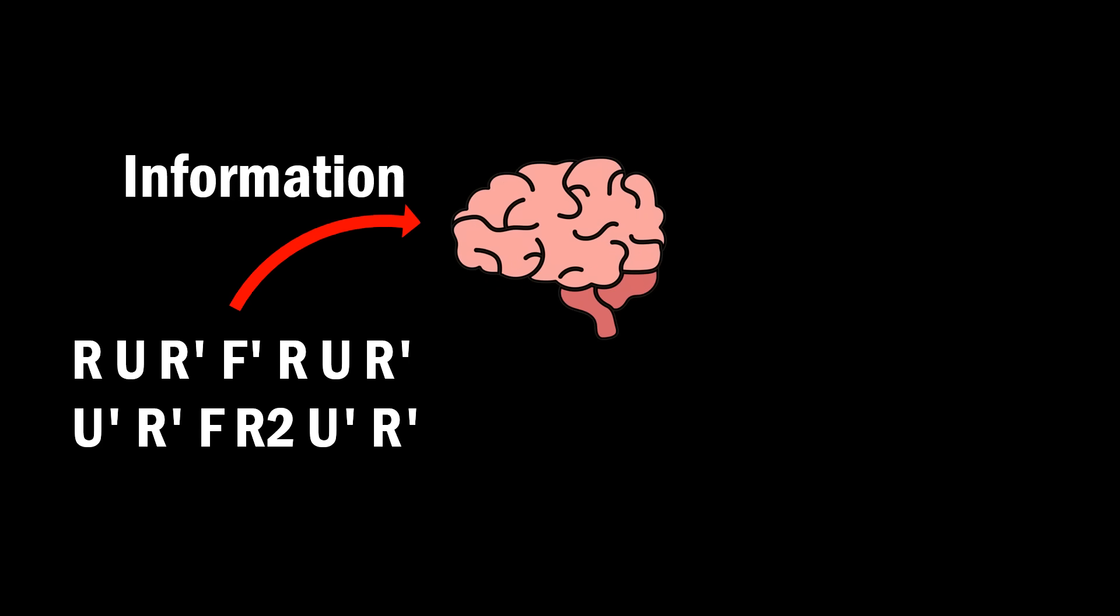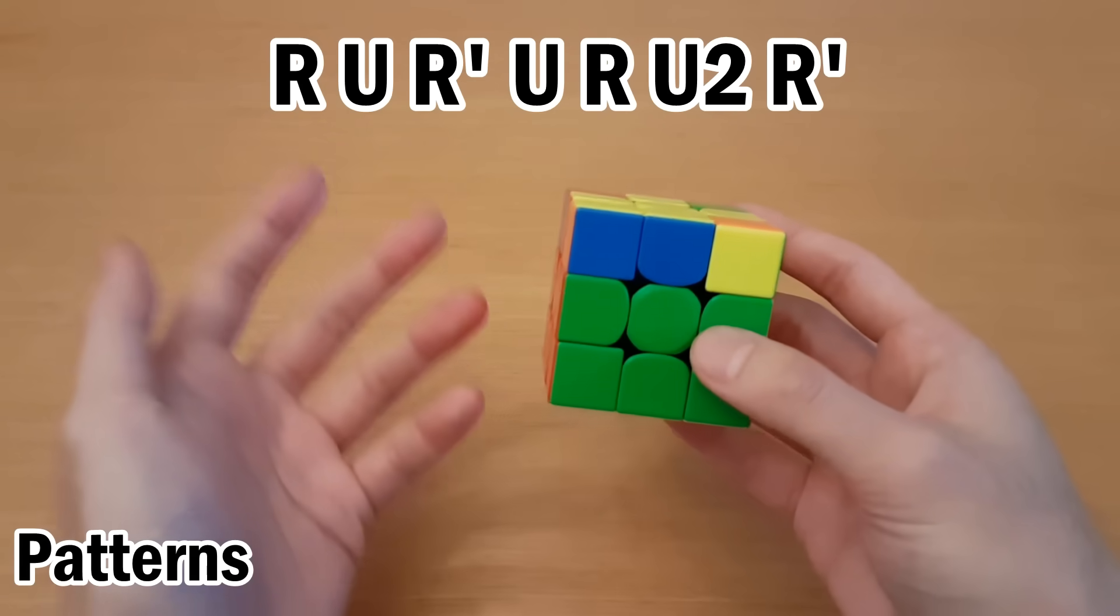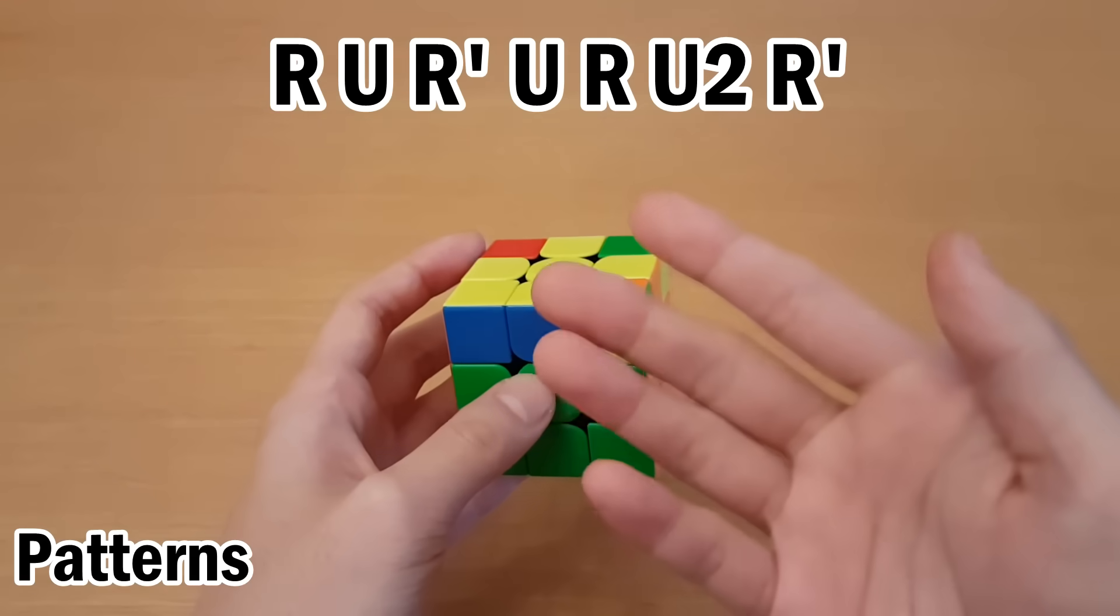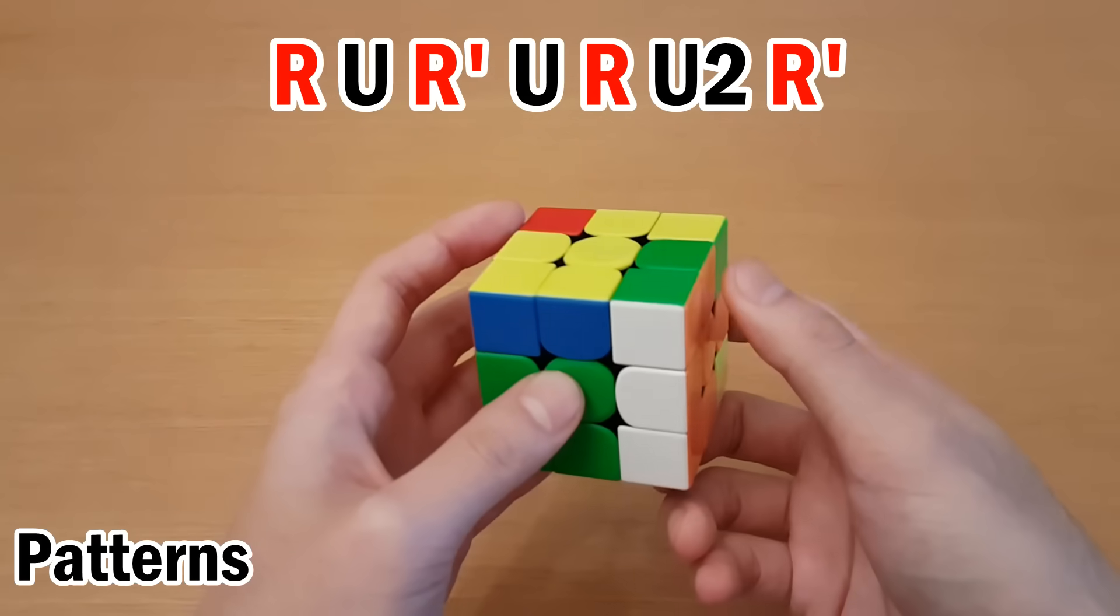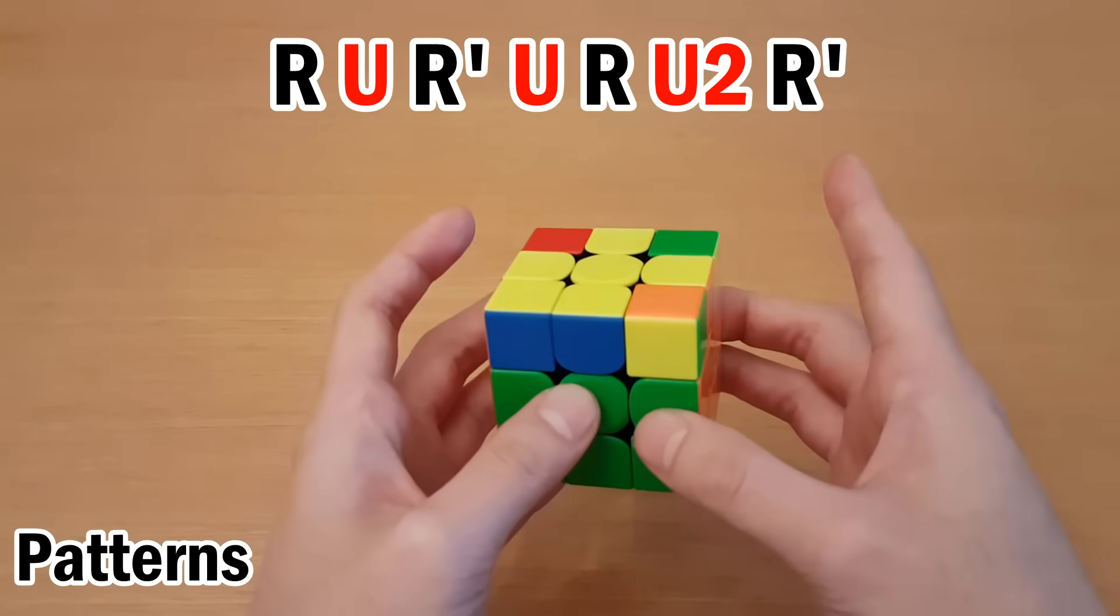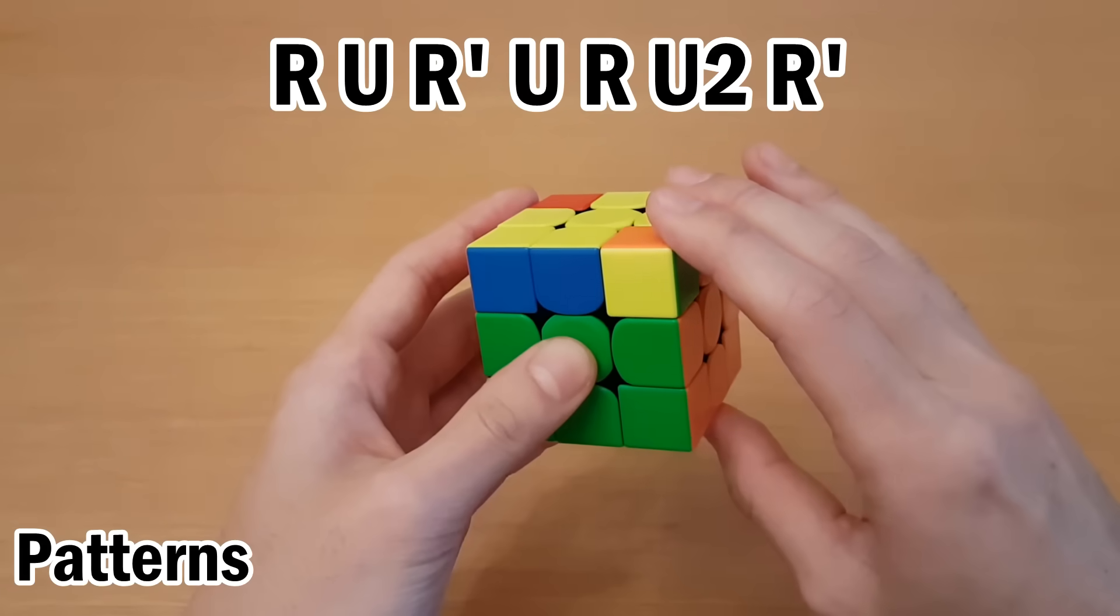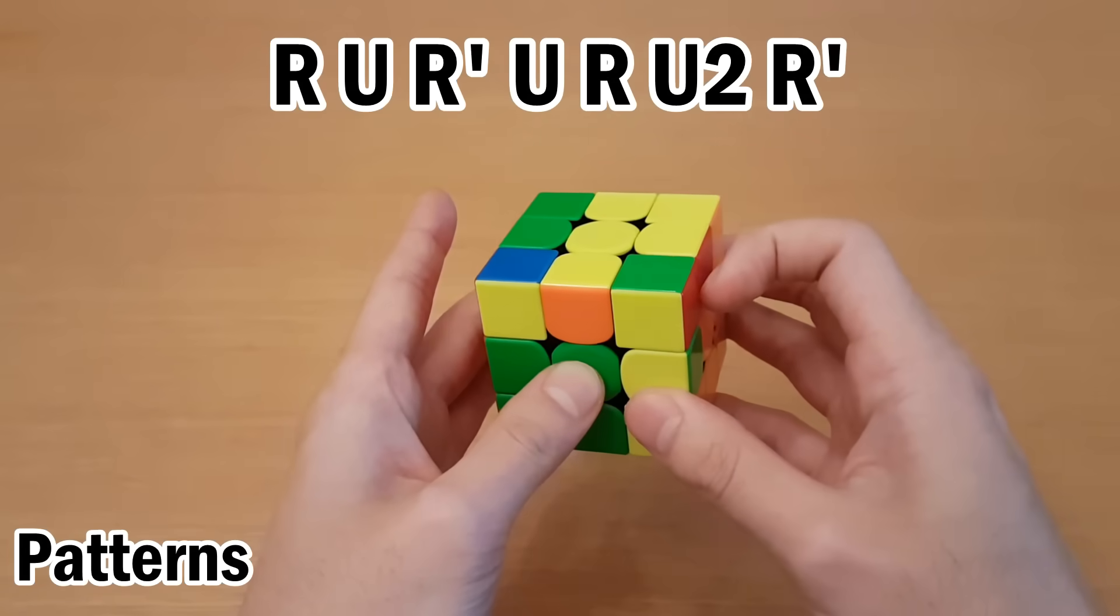So let's start with information, or how to memorize the algorithm. You want to start by breaking down the algorithm into smaller or more memorable pieces of information. For example, these R moves always go up followed by down, then up, then down, and the U moves go U, U, U2. So we've condensed the information, and now it's a lot easier to go through it without messing up.